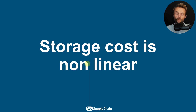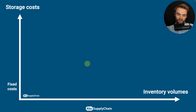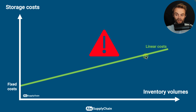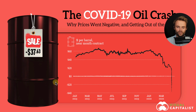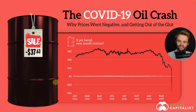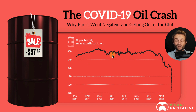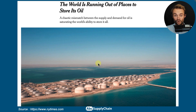Parameter four is storage cost — you pay to store your products in your warehouse or factory. What's really important is that storage cost is non-linear. You have a fixed cost plus a variable component that grows with inventory volume. To explain why it's non-linear, let's look at the COVID-19 oil crash, when oil went from $60 down to minus $37.